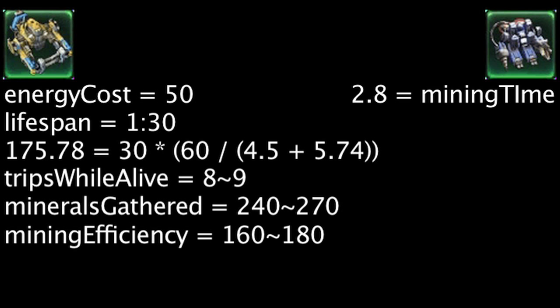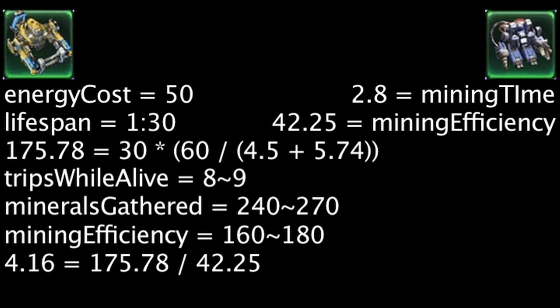An SCV has a mining efficiency of 42.25 minerals per minute, making the mule 4.16 times more efficient.